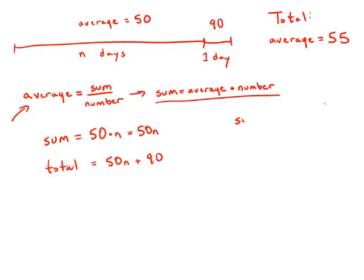Well, of course, this should equal the total average times the total number of days, which is n plus 1. So we get this equation: 50n plus 90 equals 55 times n plus 1.